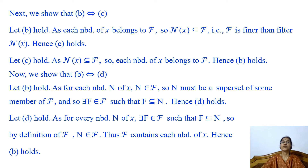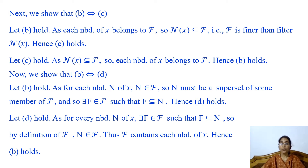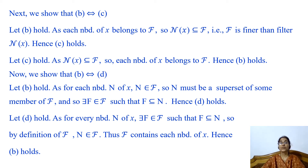Next, we show that B and C are equivalent. Let B hold, meaning F contains each neighborhood of x. As each neighborhood of x belongs to F, the collection of all neighborhoods of x, that is N(x), is contained in F. That is, F is finer than the neighborhood filter N(x). Hence C holds. Conversely, let C hold. As N(x) is contained in filter F, each neighborhood of x belongs to F. Hence B holds.